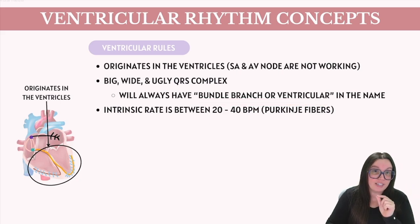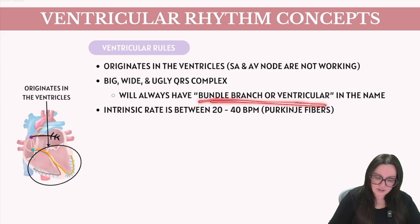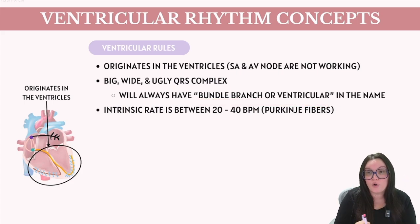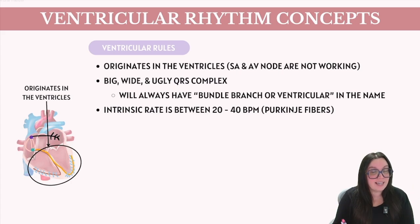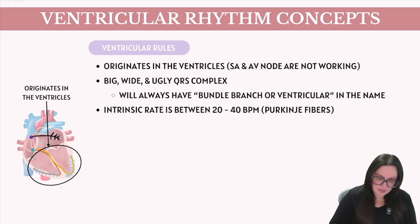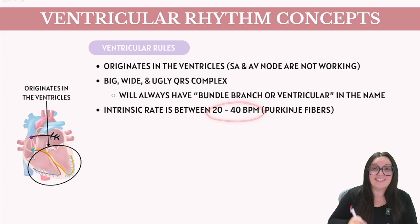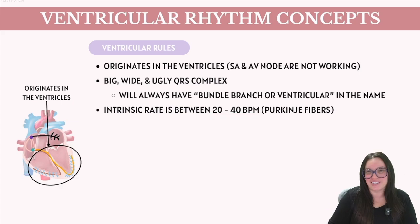The biggest key I can help you with on ECG exams is that if the big, wide, ugly QRS is taking place, it's always going to have bundle branch or ventricular in the name. The intrinsic rate is also going to be different. With SA node rhythms we see 60 to 100 beats per minute; with AV node rhythms, 40 to 60 beats per minute. With ventricular rhythms, we're going to see an intrinsic rate between 20 and 40 because they originate from the Purkinje fibers — the heart's last fail safe to maintain life.